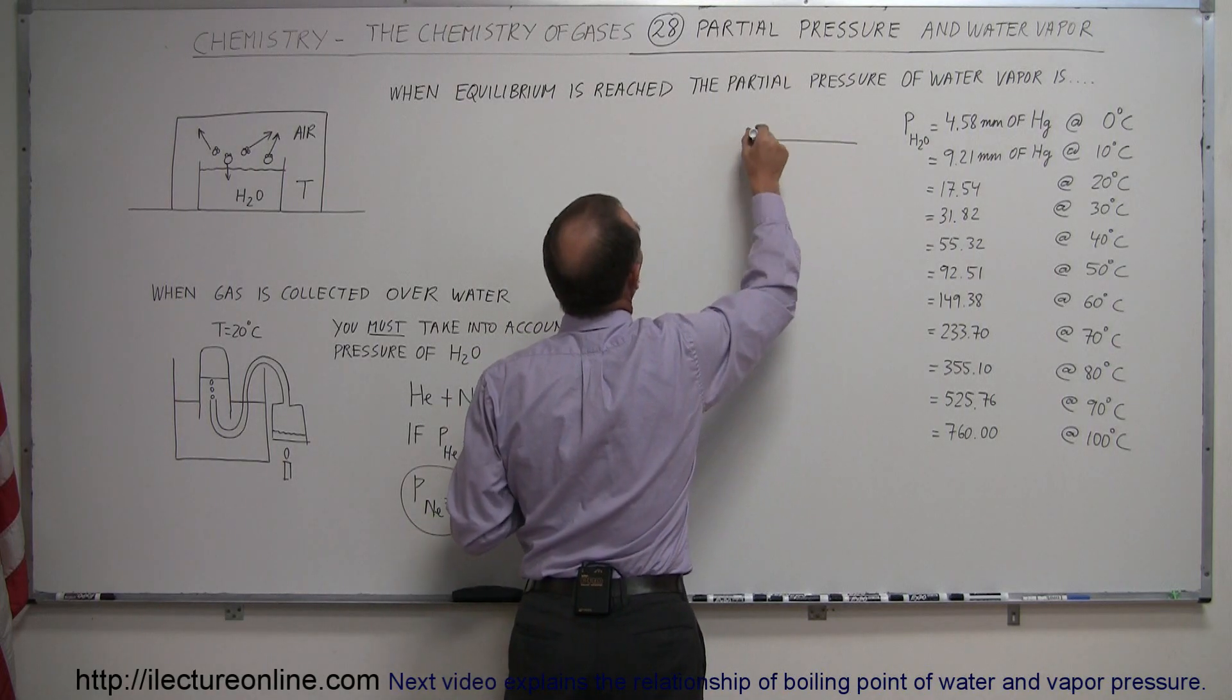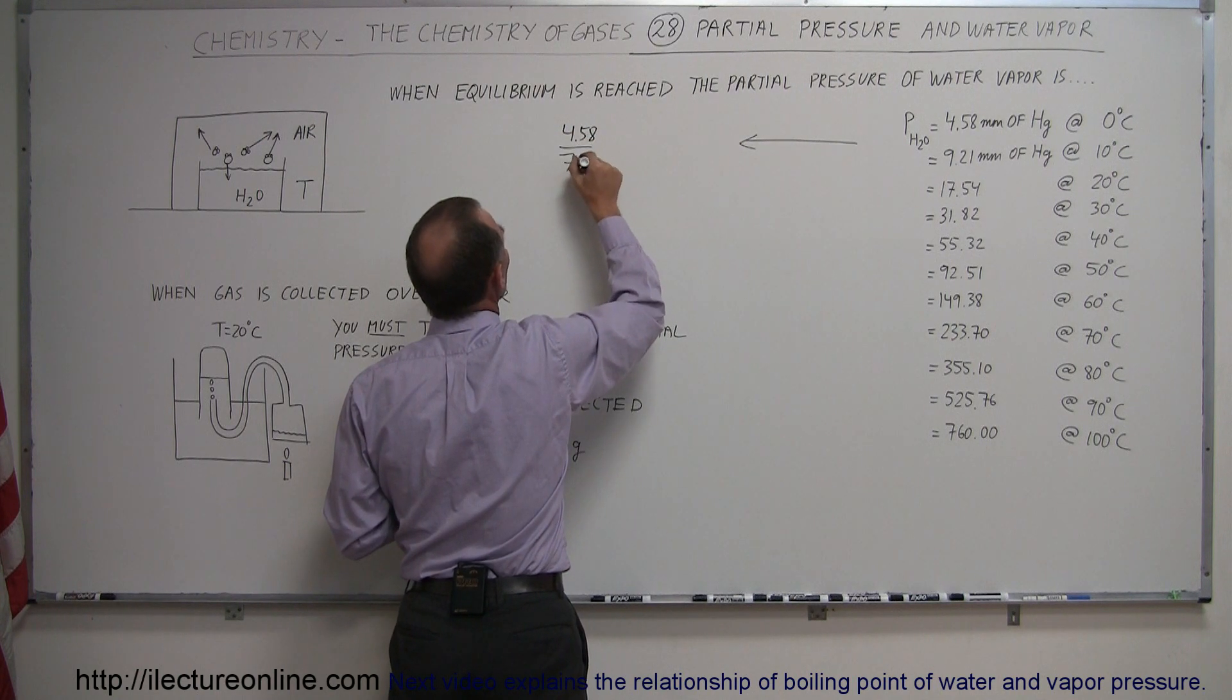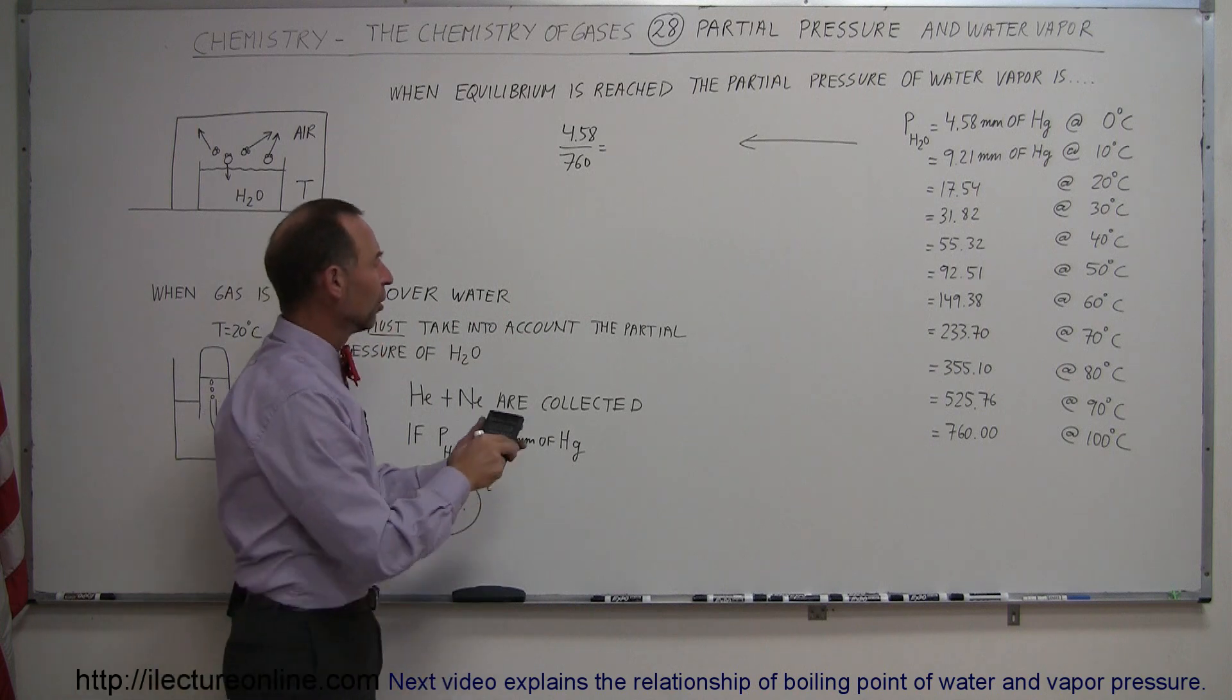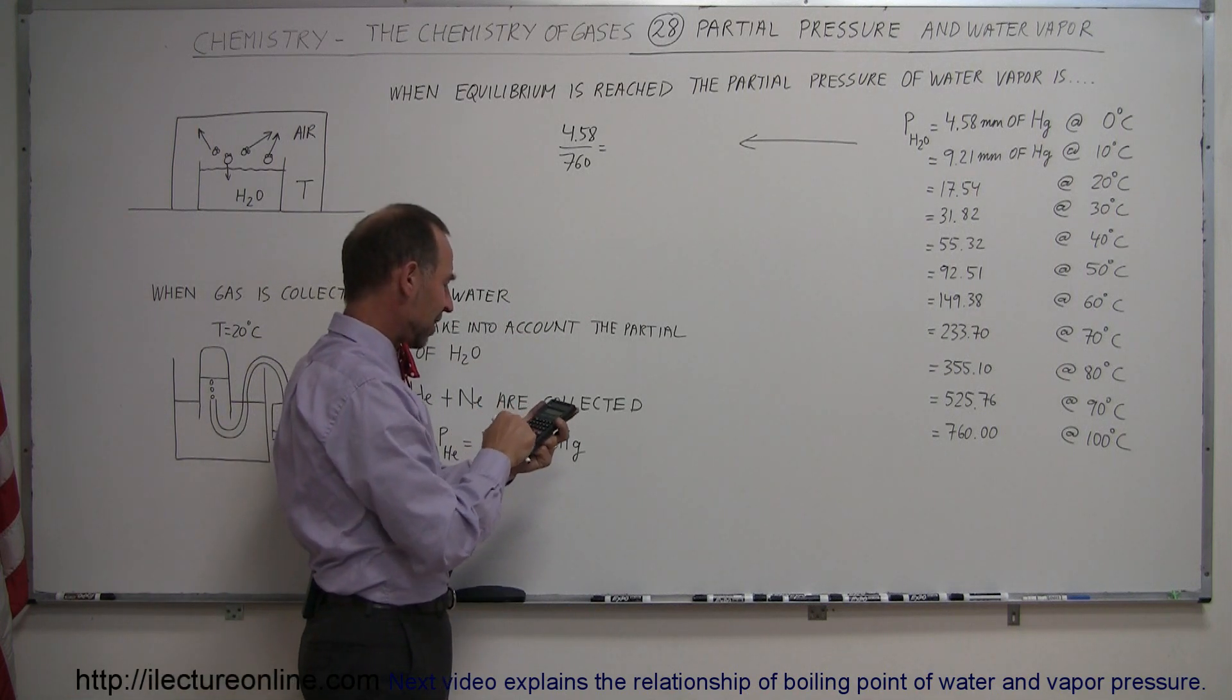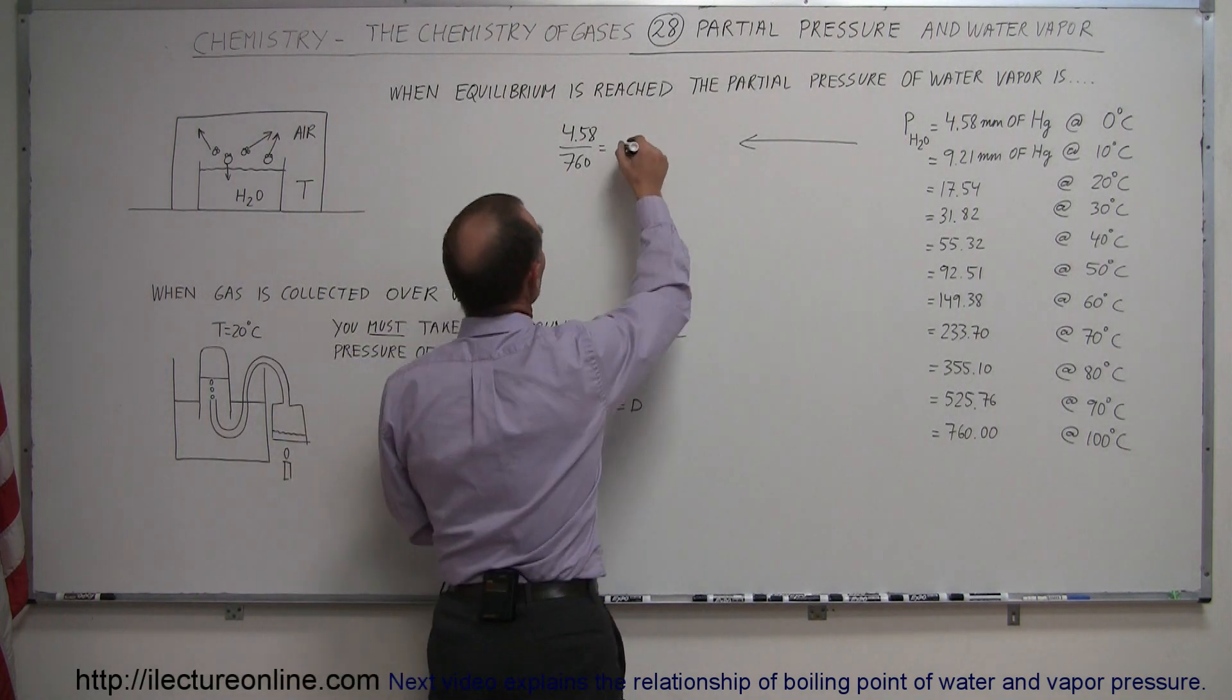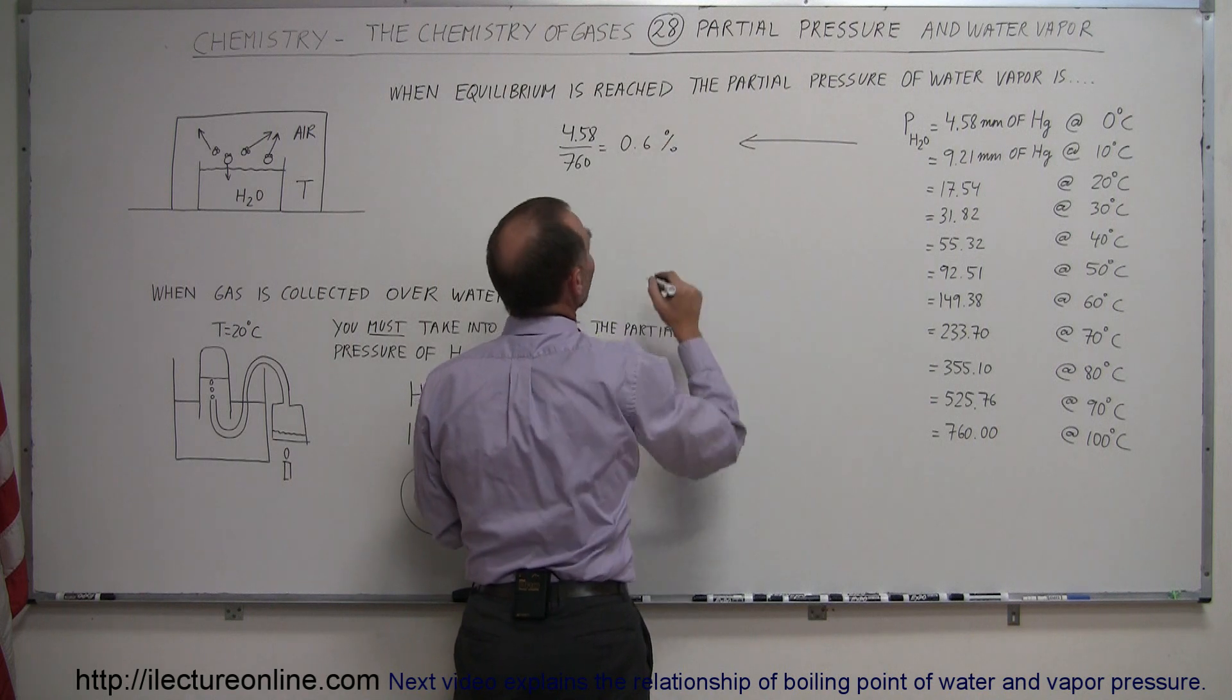So at zero degrees centigrade, let's divide 4.58 divided by 760, because that's the number of millimeters of mercury of atmospheric pressure. So you can see that 4.58 divided by 760 is less than one percent. That is equal to 0.6 percent.